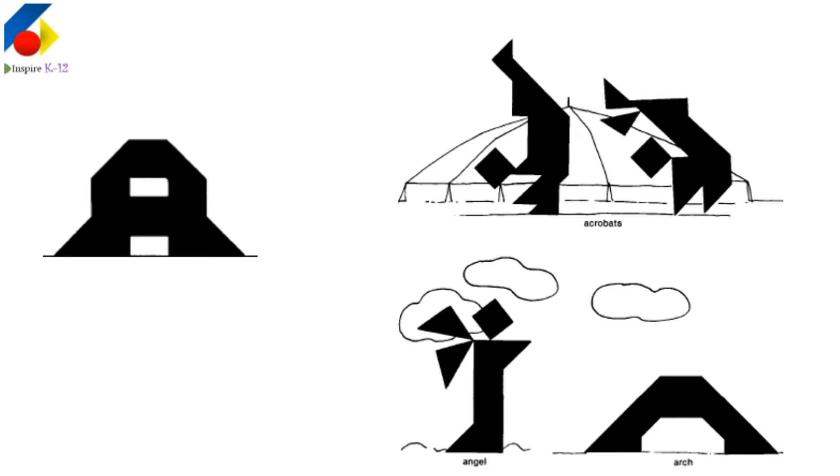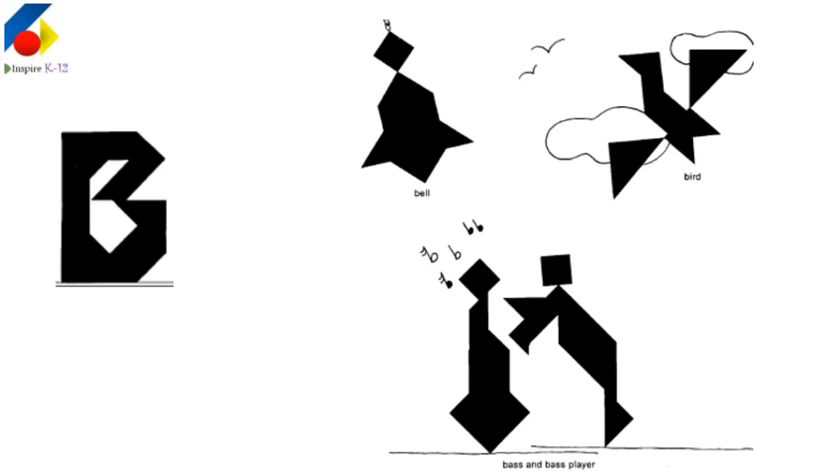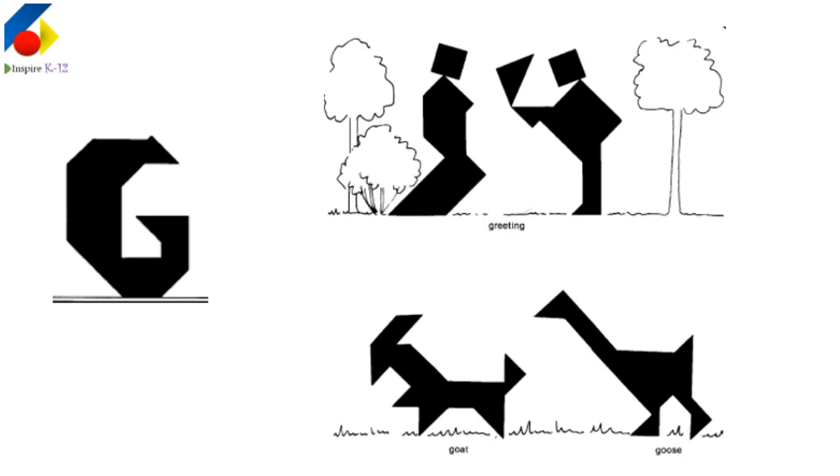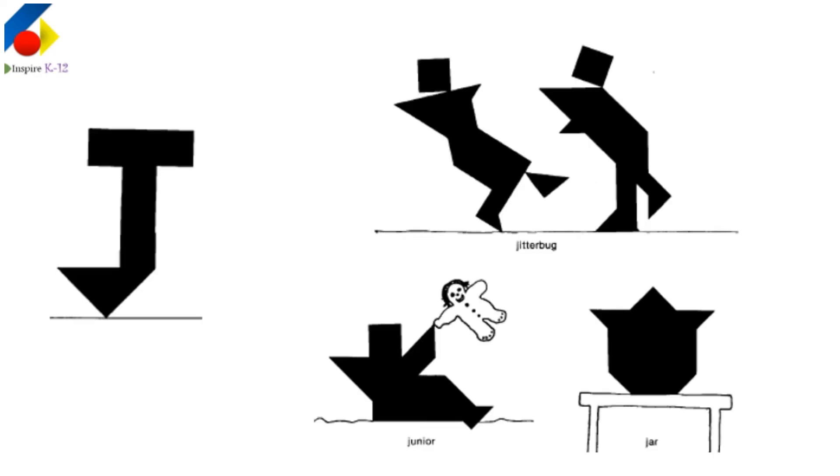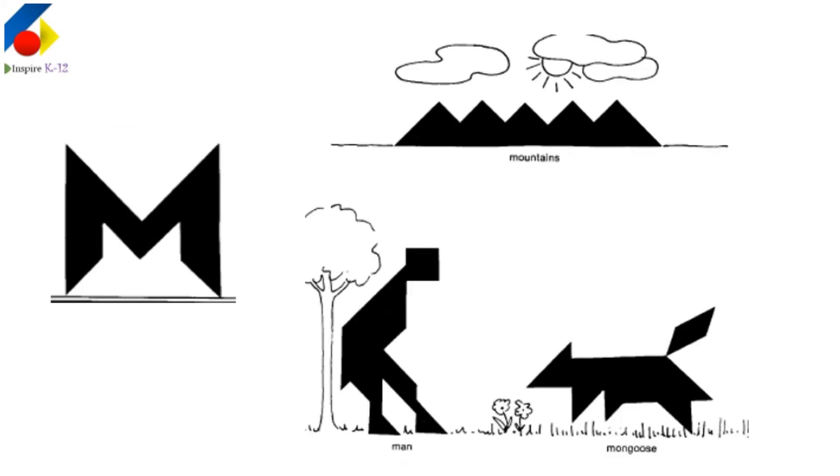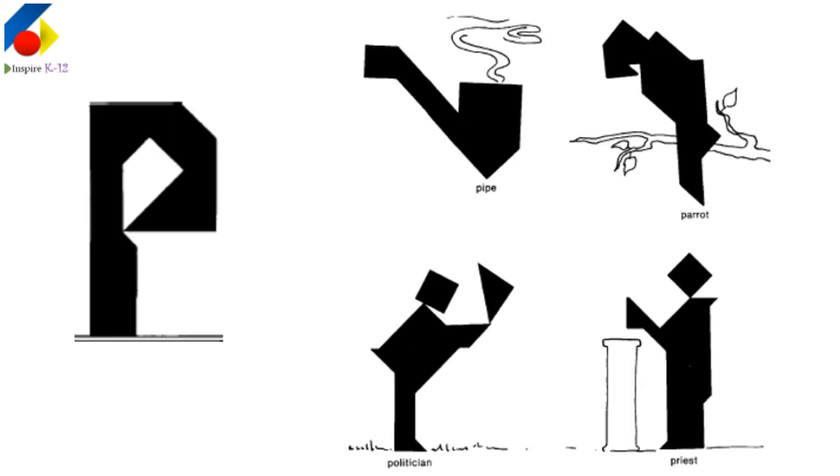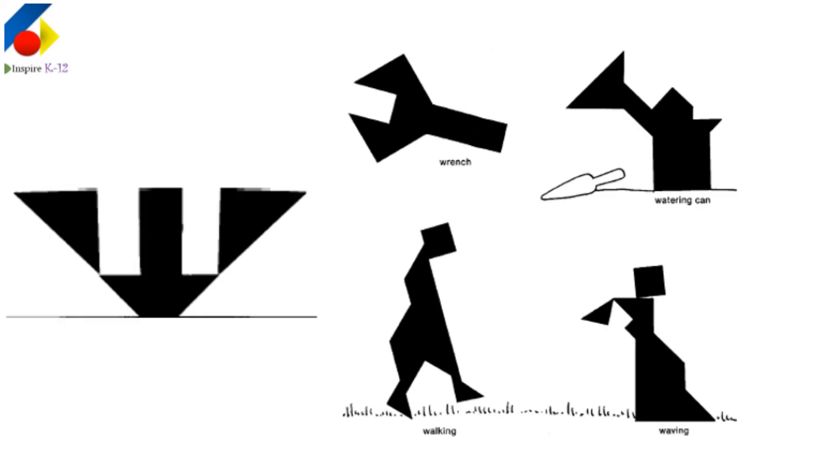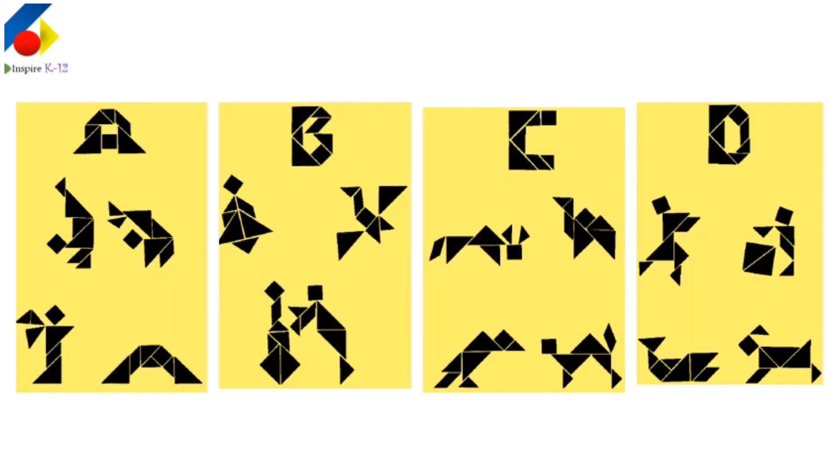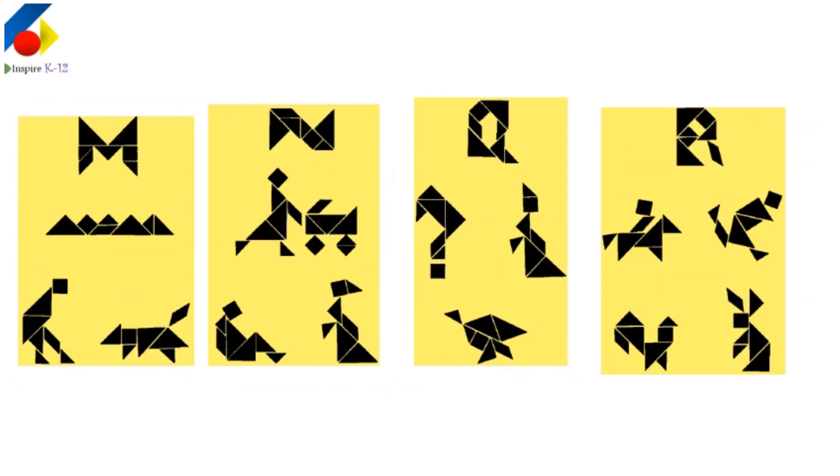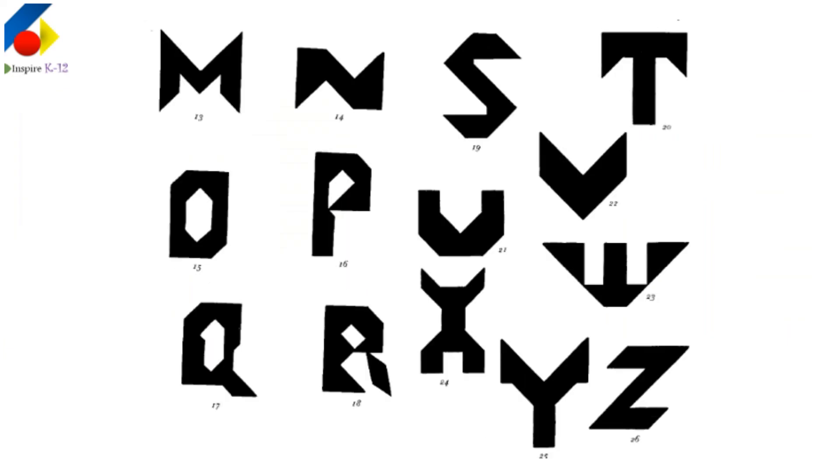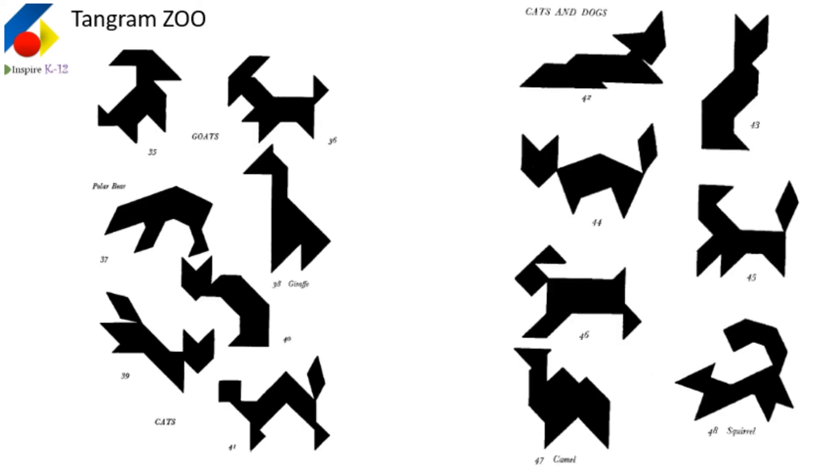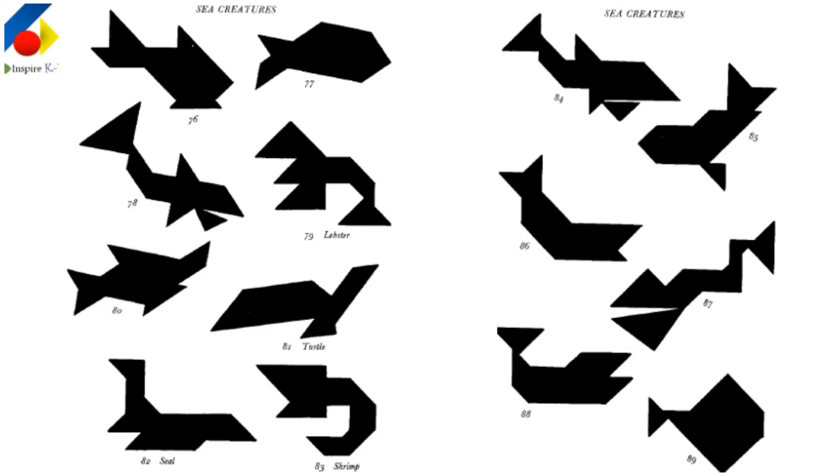Now this is with A, you have acrobats, angels, arts. With B, you have bell, bird. So likewise numbers. You can make an entire zoo. And these are the solutions.